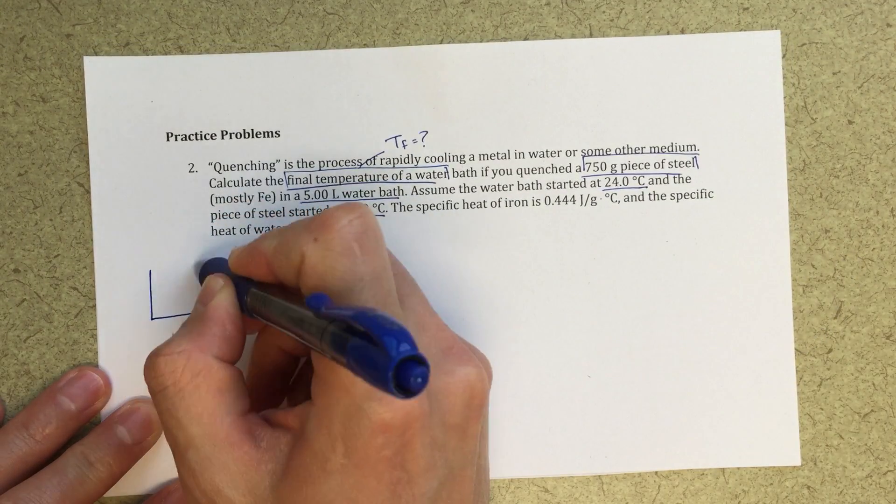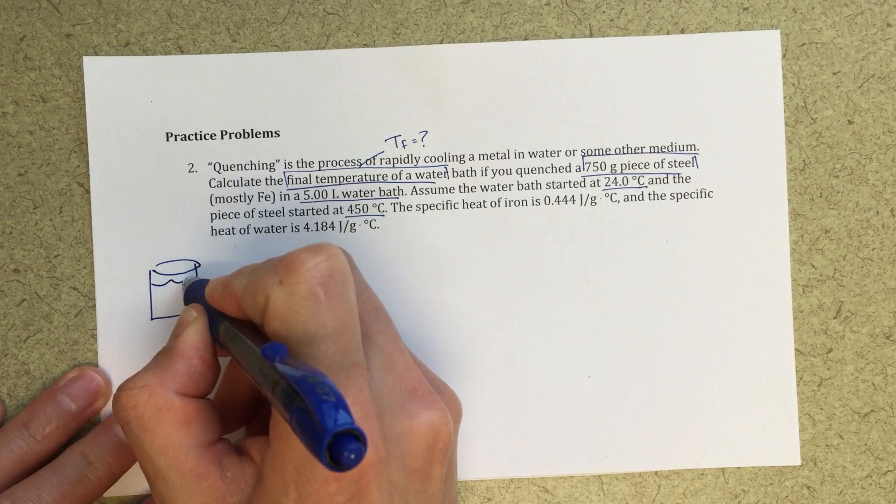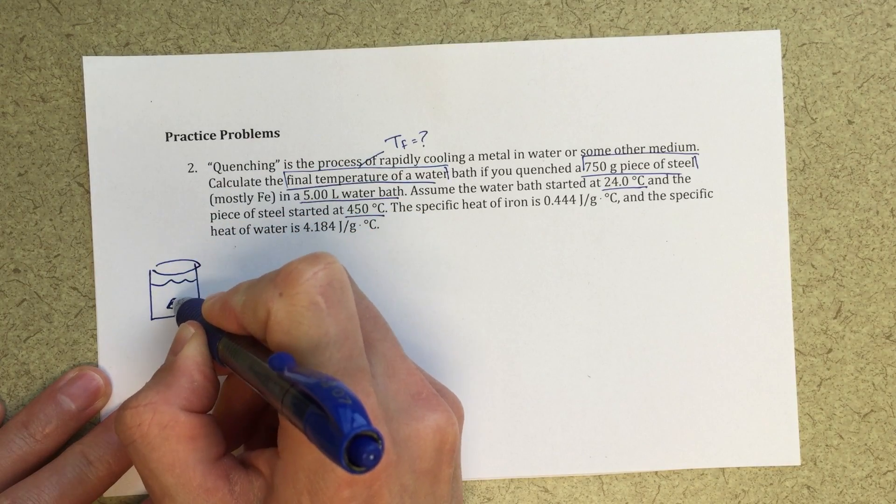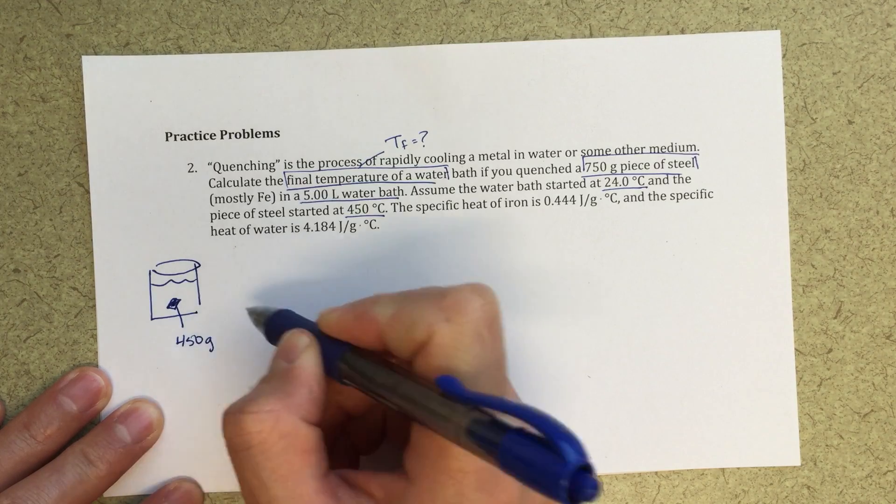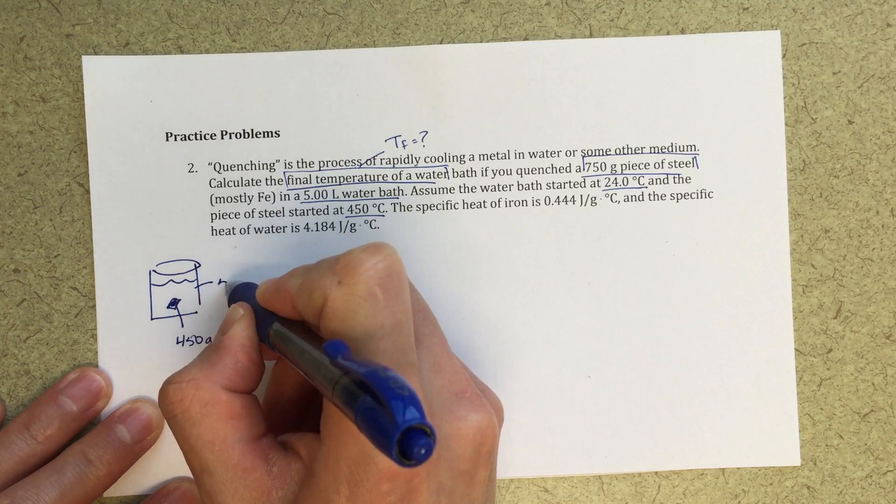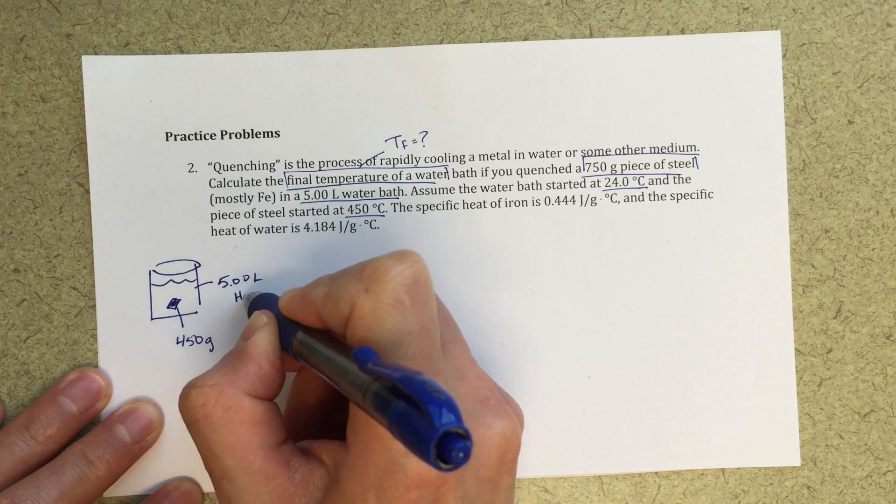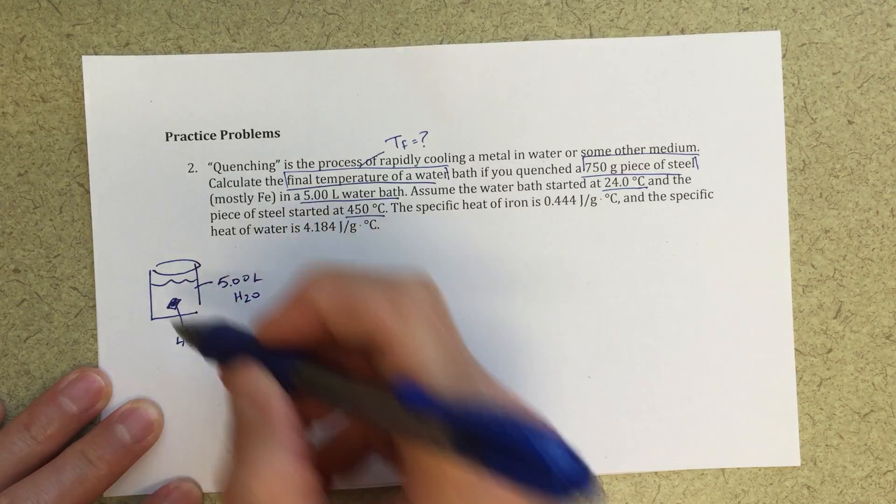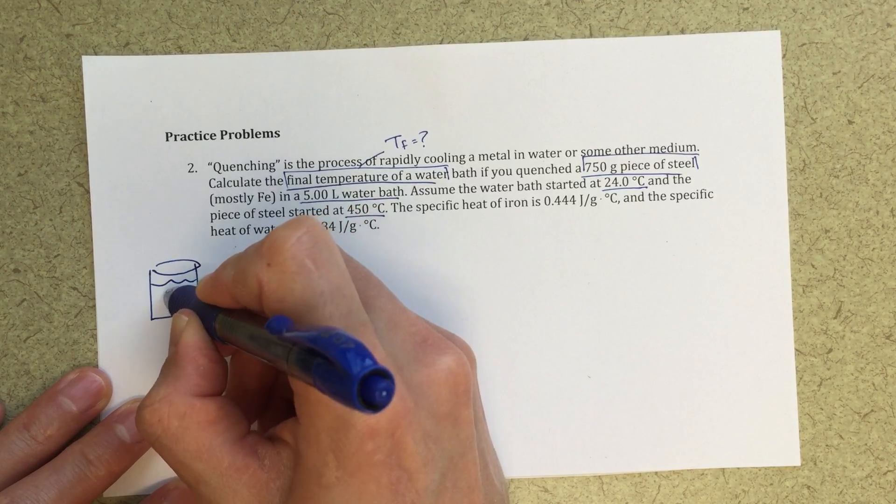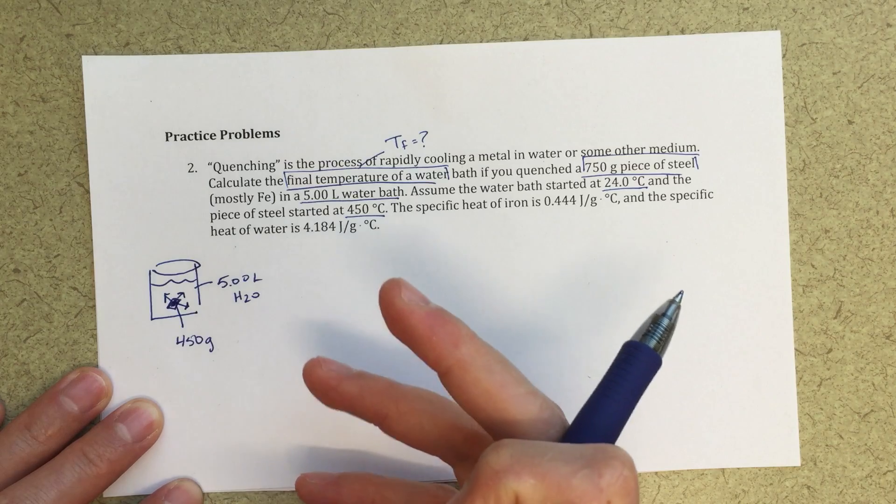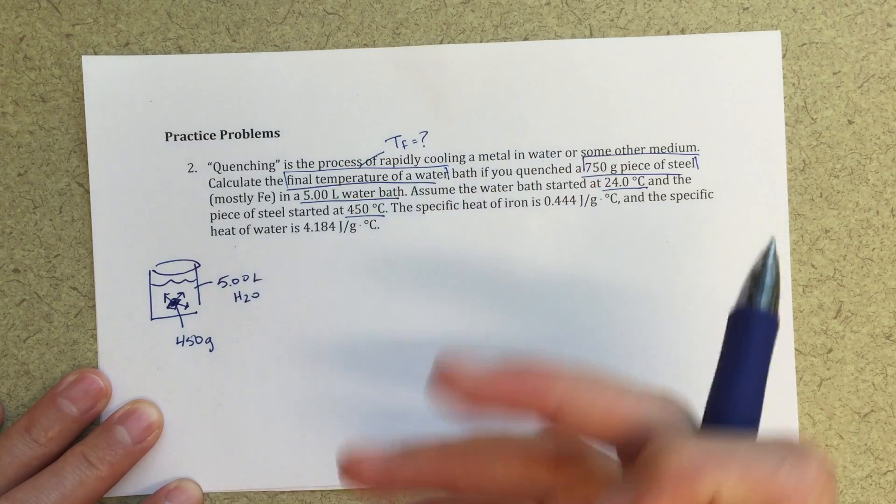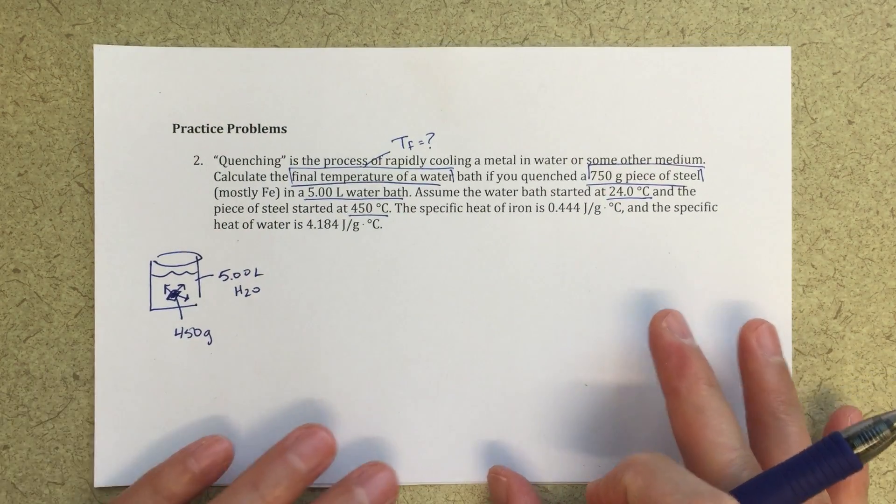So if I wanted to draw a little picture, and I would recommend you guys always draw these little pictures, here's my piece of metal. So I've got 450 grams of metal and I've got 5.00 liters of water. And there's going to be an energy transfer, there's going to be energy being transferred from the metal to the surrounding water. So we can set up some equations and think about what's going to be happening here.